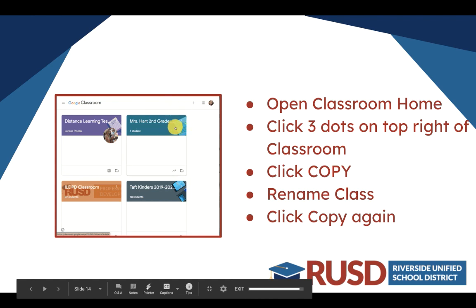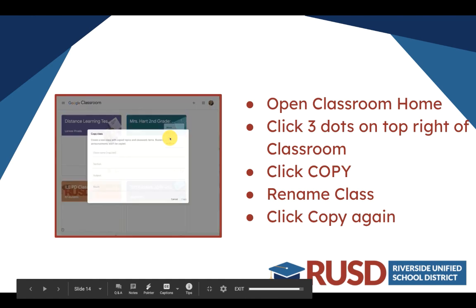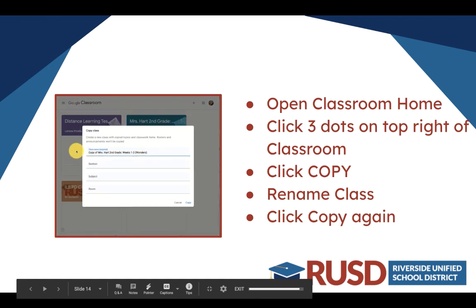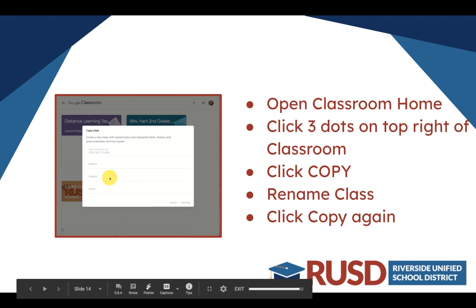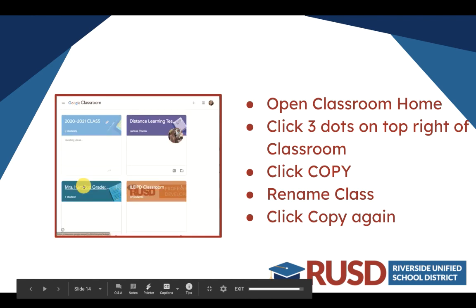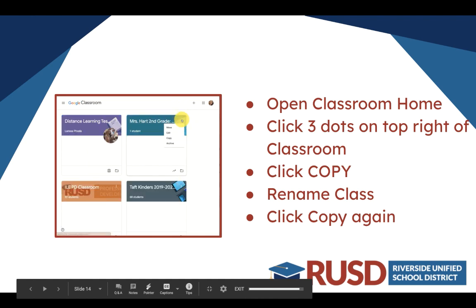Open your classroom home and click on the three dots at the top right of your classroom. You then have the option to copy your entire class. Name the class for next year and then click Copy again, and you'll see that it creates a new class for you that you can use next year — everything will be in draft and you can pull it out when you're ready to use it.